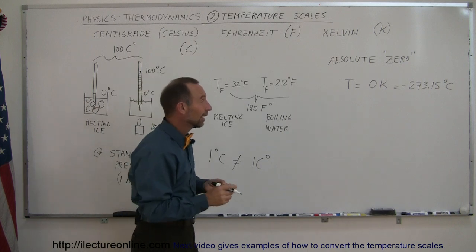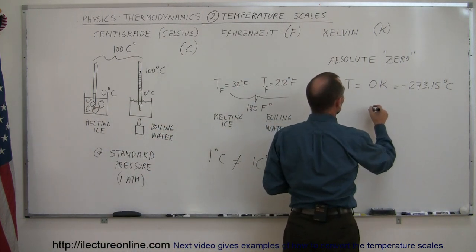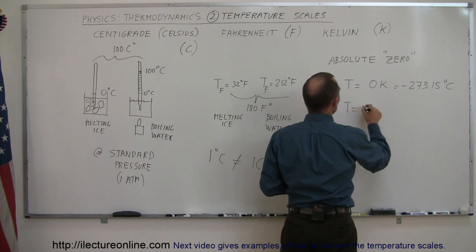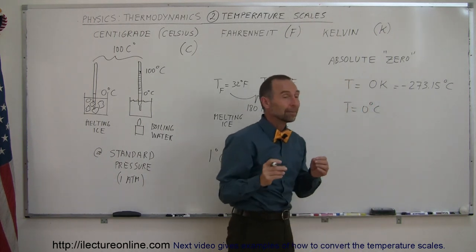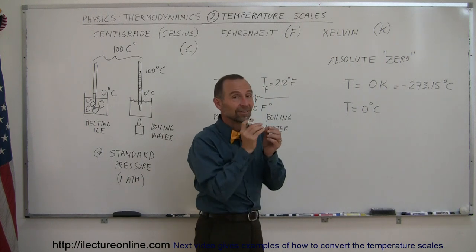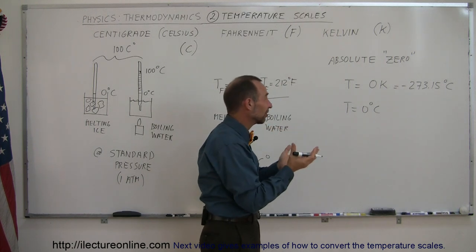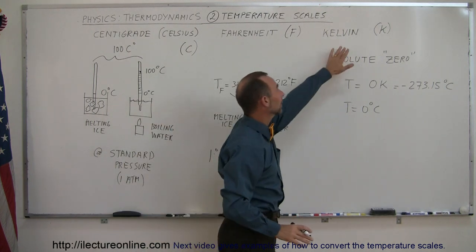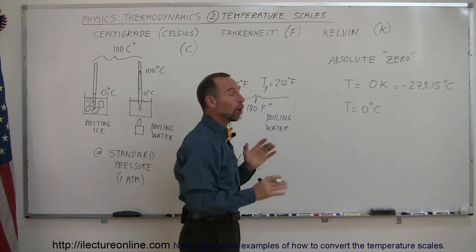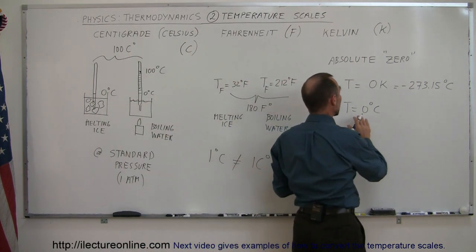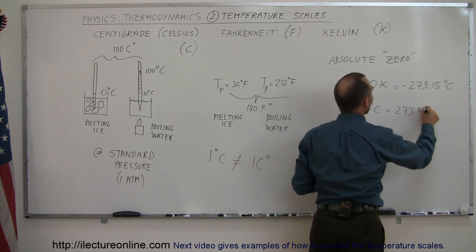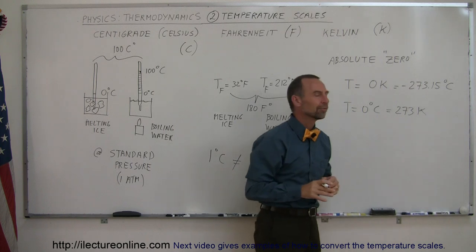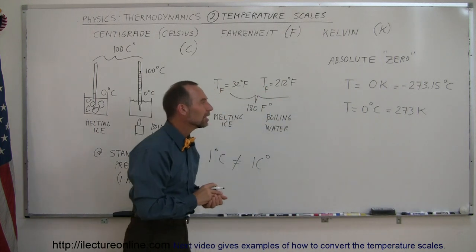So that means that zero centigrade, so if the temperature is equal to zero degrees centigrade, which is 270 degrees warmer than that, and by the way, a degree centigrade is the same as the degree Kelvin, they're the same size. You can see that these are not the same size, but Kelvin degrees and centigrade degrees are the same size, which means that when the temperature is zero degrees centigrade, that is equal to 273 Kelvin.